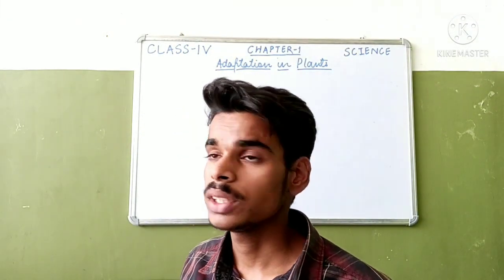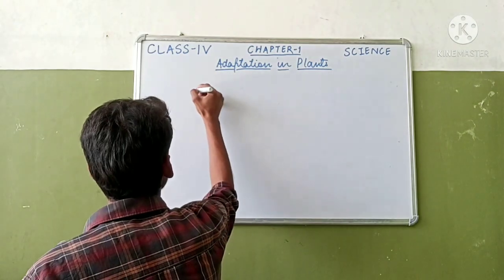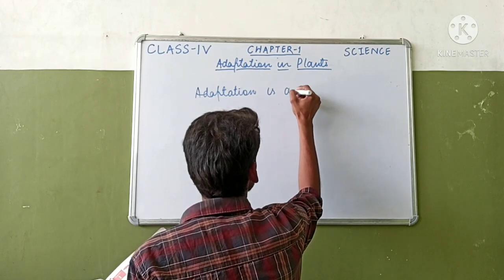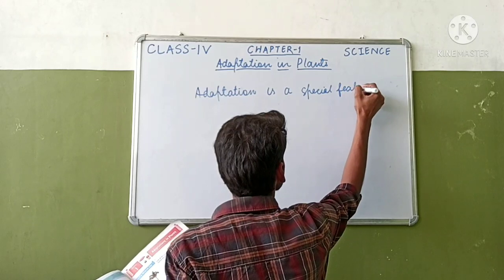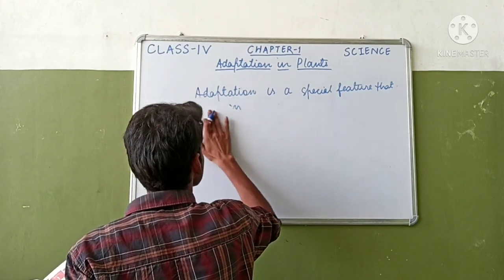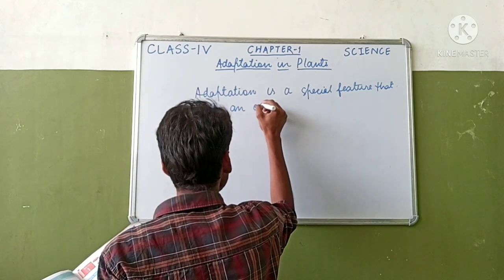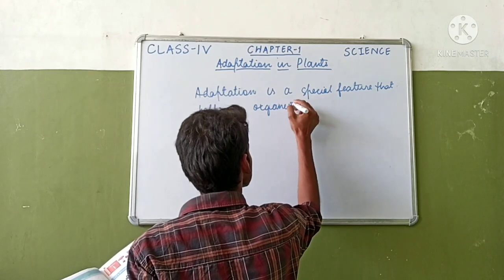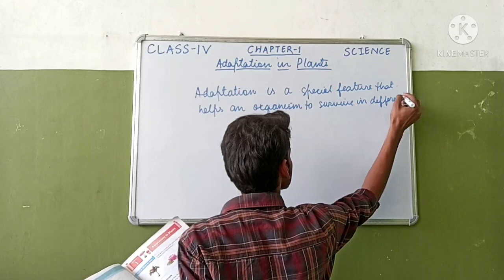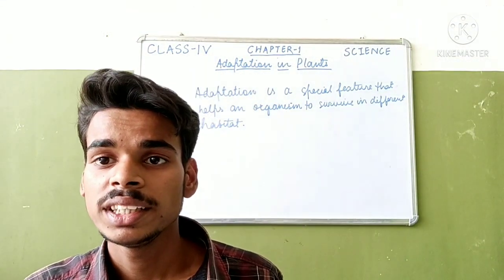Hello students, today I am going to teach you the first chapter of Class 4 Science, that is adaptation. So firstly we will try to know what is adaptation — what is the definition of adaptation. Adaptation is a special feature that helps an organism to survive in different habitats. Adaptation helps an organism to survive in different places and habitats.